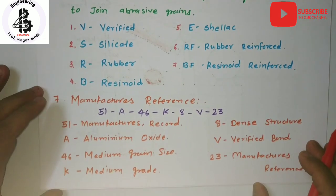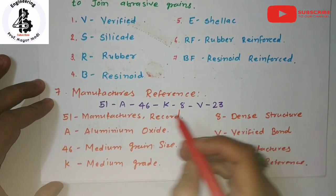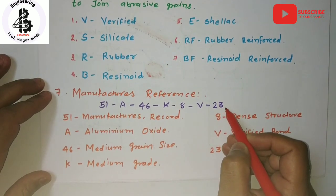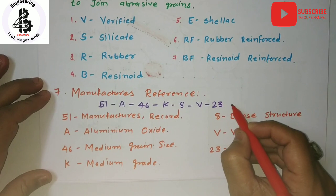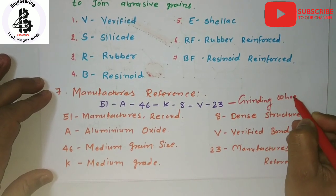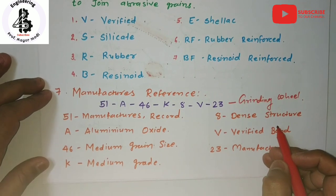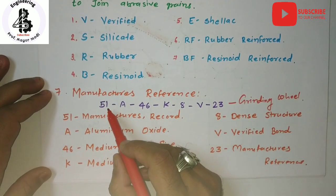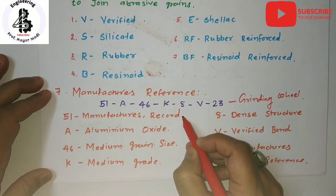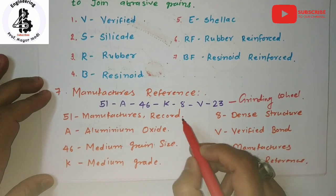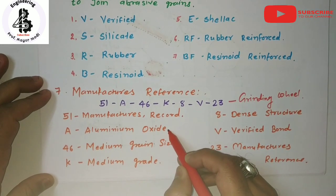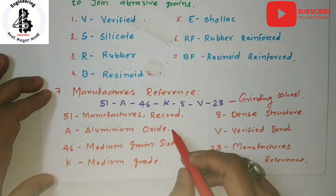Let us see an example of the representation of a grinding wheel from the manufacturing reference: 51, A, 46, K, 8, V, and 23. You can find these indications on the grinding wheel, and according to your requirements and the finished product you have to select your grinding wheel. Starting with 51 — this represents the manufacturer's record of the grinding wheel. Then A stands for aluminium oxide materials being used as the grain material.